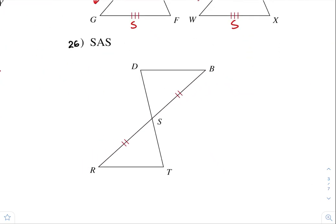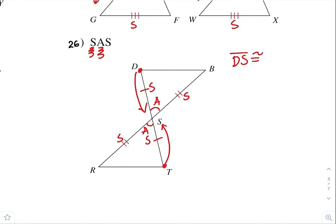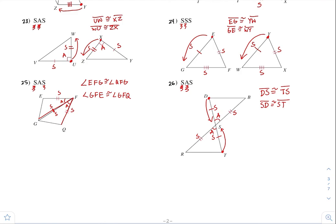Number 26. Anything you guys can assume — these are vertical angles, so we can say those are congruent. We have one pair of congruent sides and one pair of congruent angles, so we have a side and an angle. We are missing a second pair of congruent sides, and the angle has to be in between the two sides. So this side has to be congruent to this side. Segment DS has to be congruent to TS. Hopefully this helps you guys out — it just takes getting used to and practice.